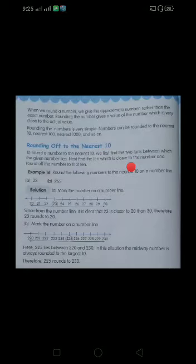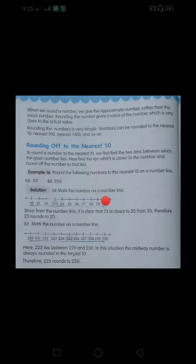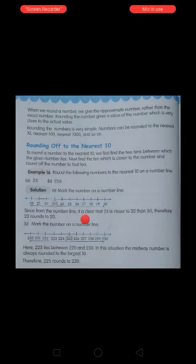Rounding off to the nearest 10. So, if we have to round off a given number to the nearest 10, firstly, we have to find the two 10s between which the given number lies and then write that 10 numbers on a number line. Like here,